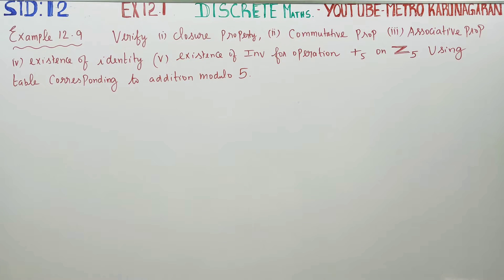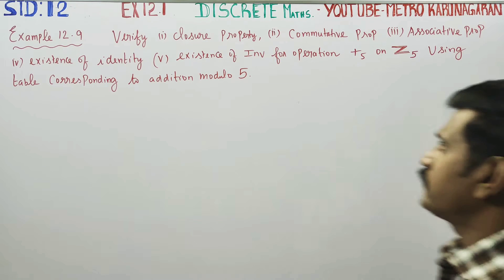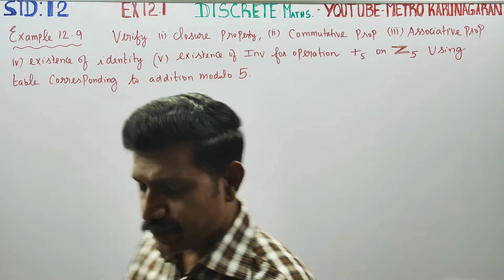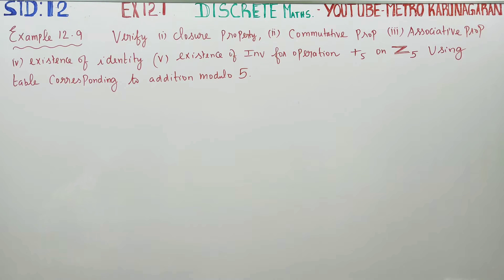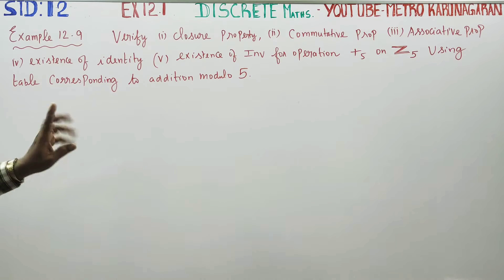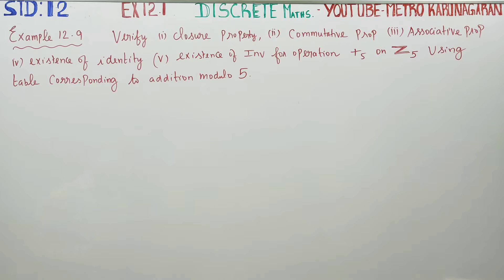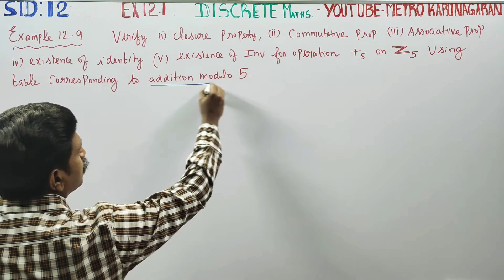Dear 12th standard students, in exercise 12.1, example 12.9, we verify the closure property, commutative property, associative property, existence of identity, and existence of inverse for the operation plus₅ on Z₅, using the table corresponding to addition modulo 5.